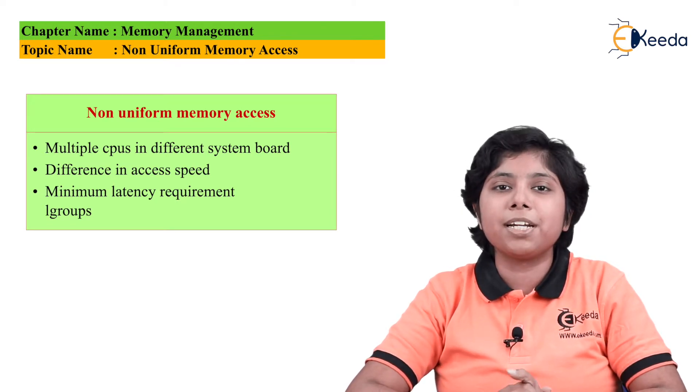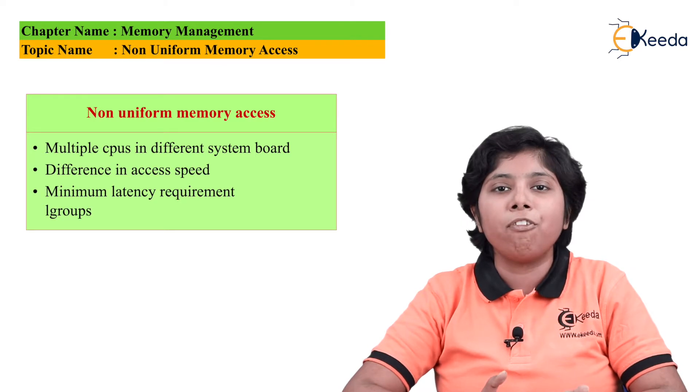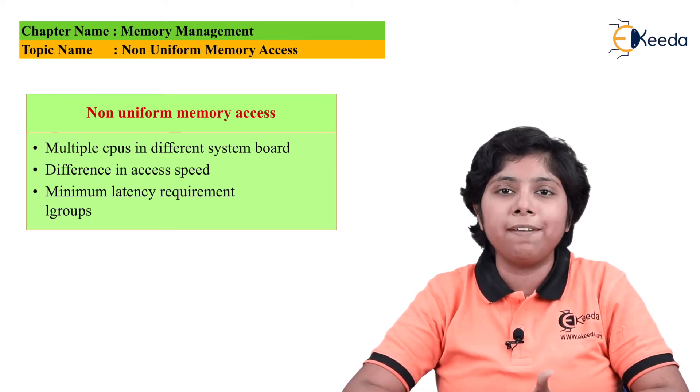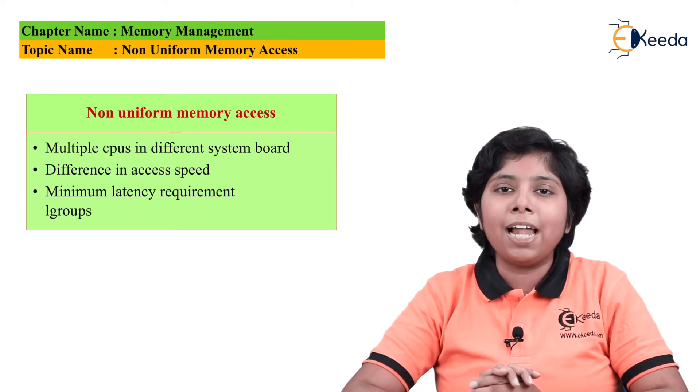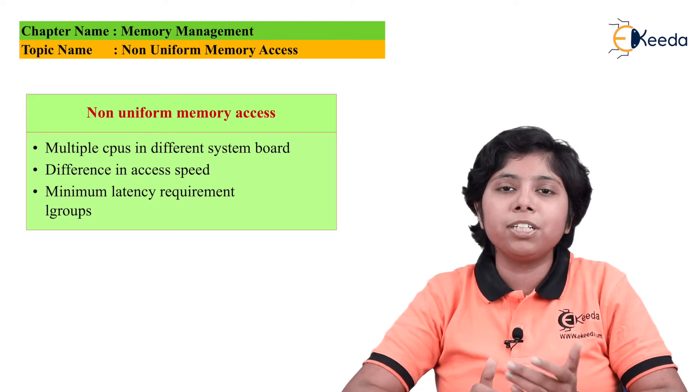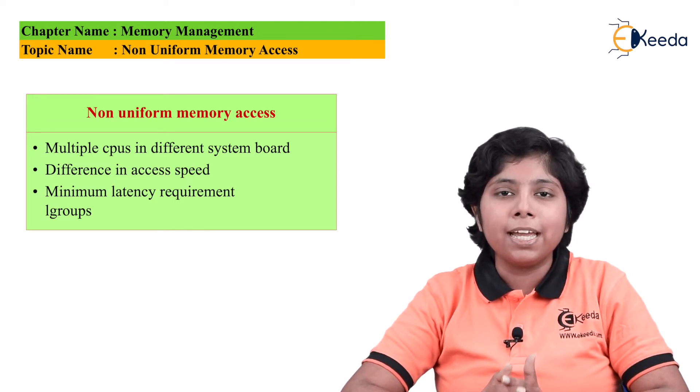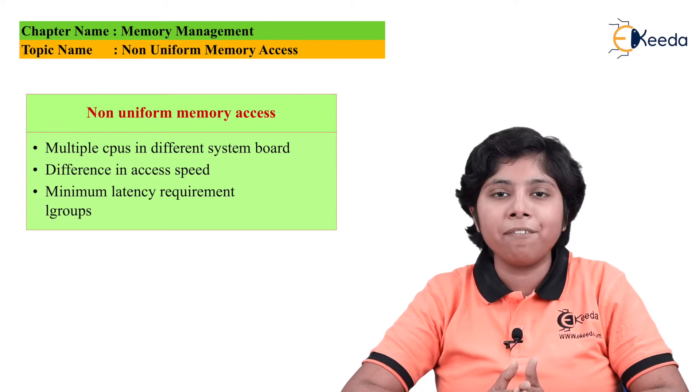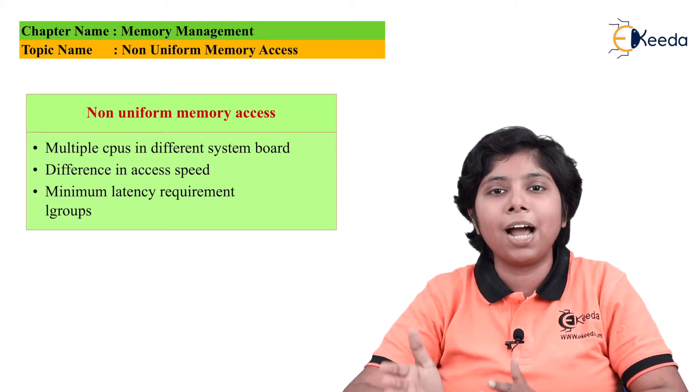Now the algorithm changes made to this type of NUMA access can consist of having the scheduler track the last CPU on which the process was running.